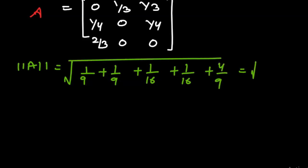For the third row, 2/3 squared gives 4/9. We add these to get 1/9 plus 1/9 which becomes 1/4, plus 4/9. Simplifying, we get √(19/144), which is less than 1.